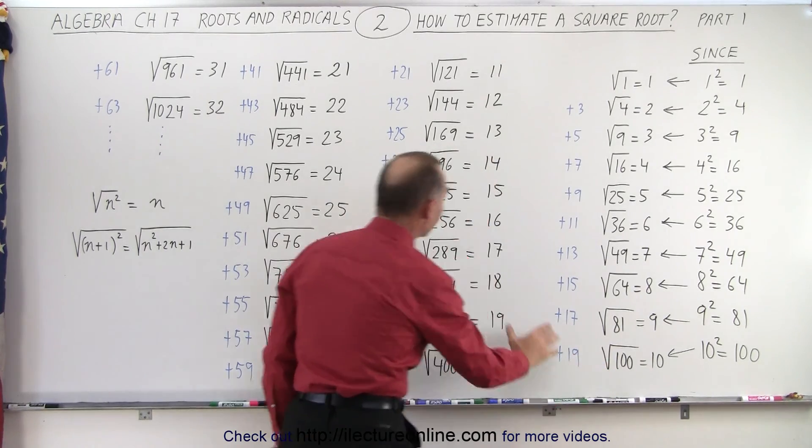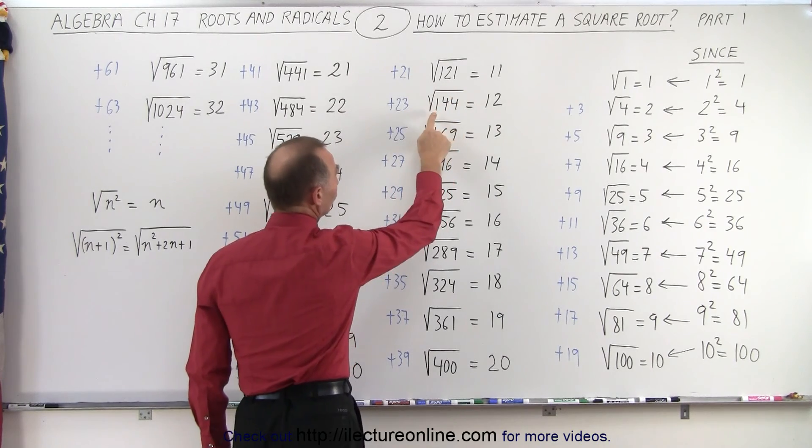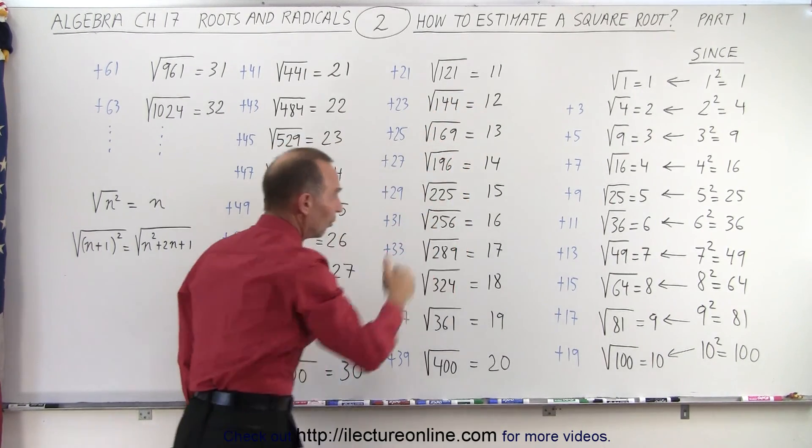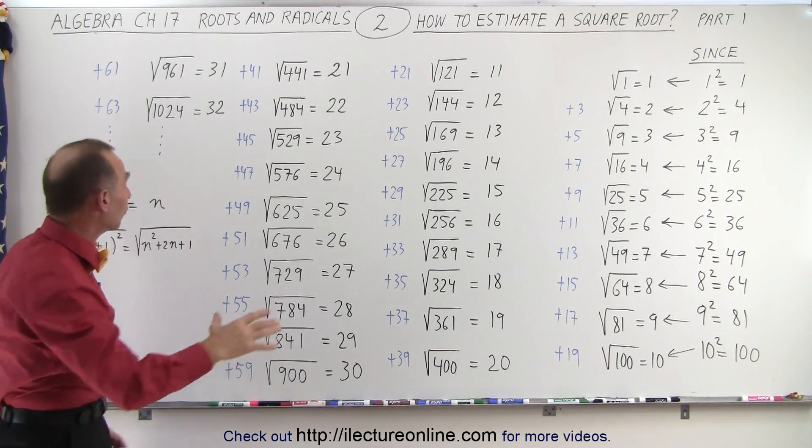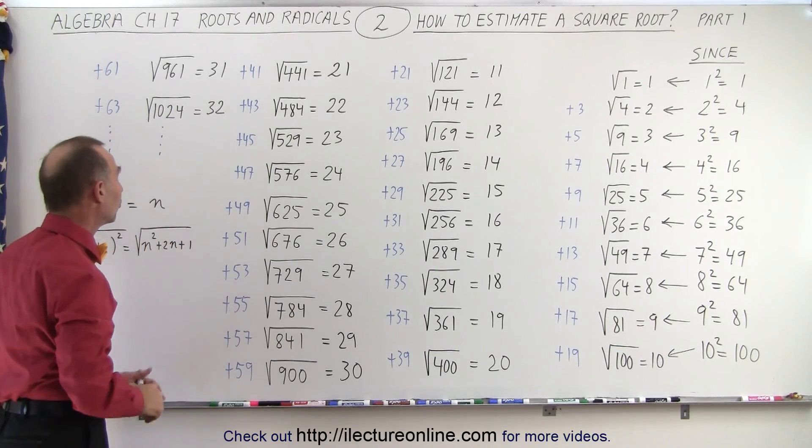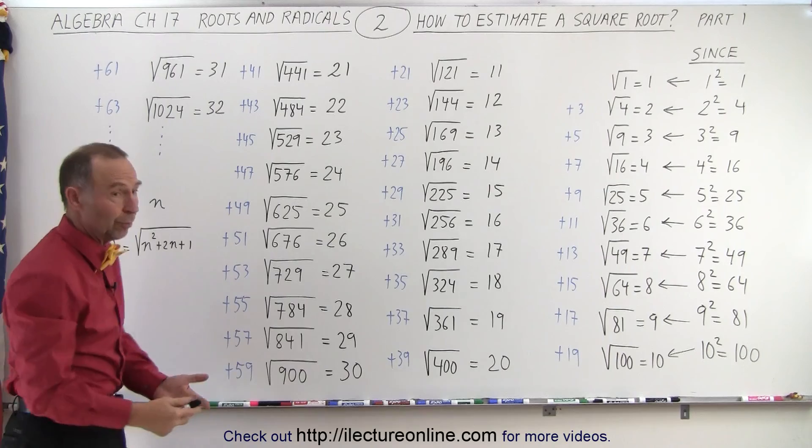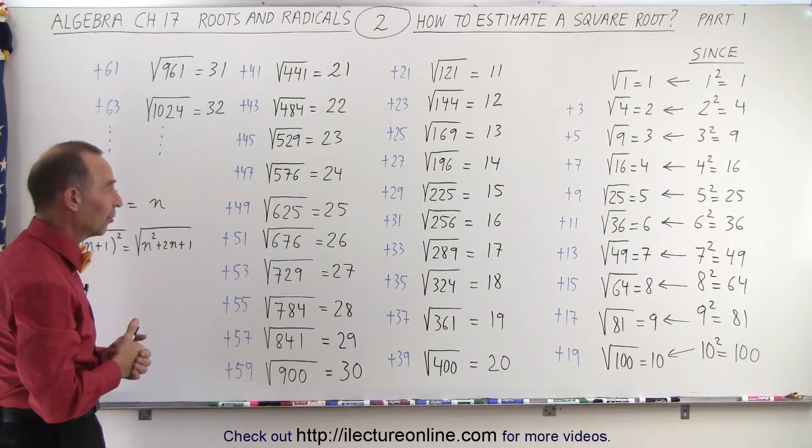And you can see now that the trend continues. Here we have the square root of 121 is 11, the square root of 144 is 12, the square root of 169 is 13, and so forth. So it's not a bad idea to at least be somewhat familiar with all these square roots, all the way maybe up to 1024. The square root of 1024 is equal to 32, because 32 times 32 is indeed 1024.